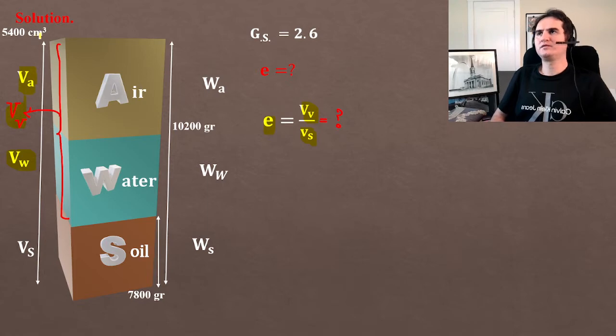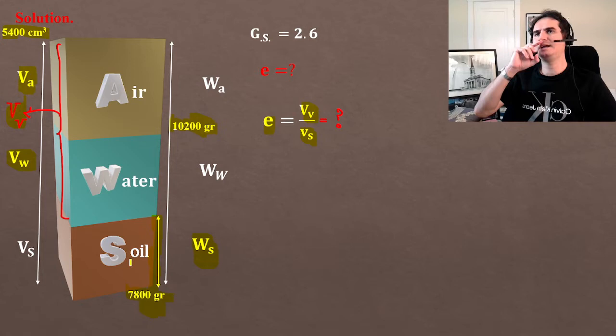Total volume is provided to be 5400 cubic centimeters, and the total weight is provided to be 10200 grams. At the same time, weight of soil grain is provided to be 7800 grams.